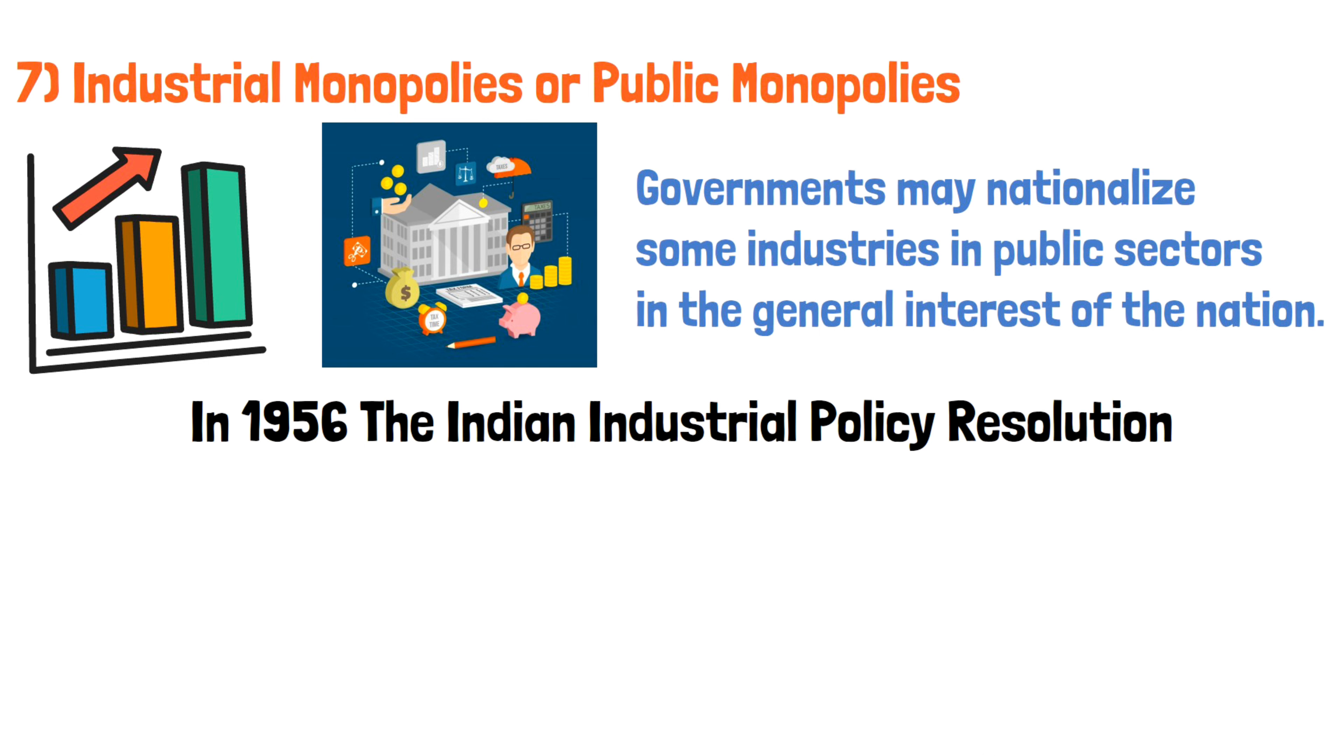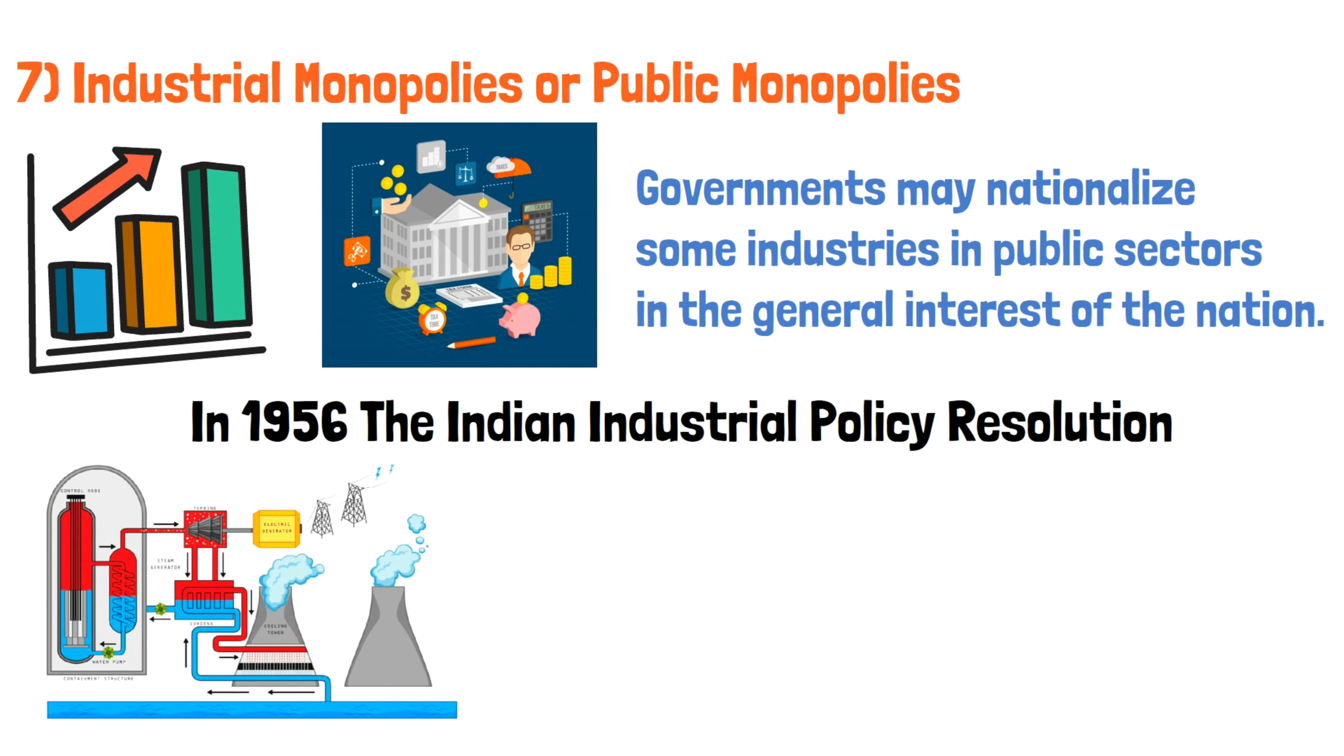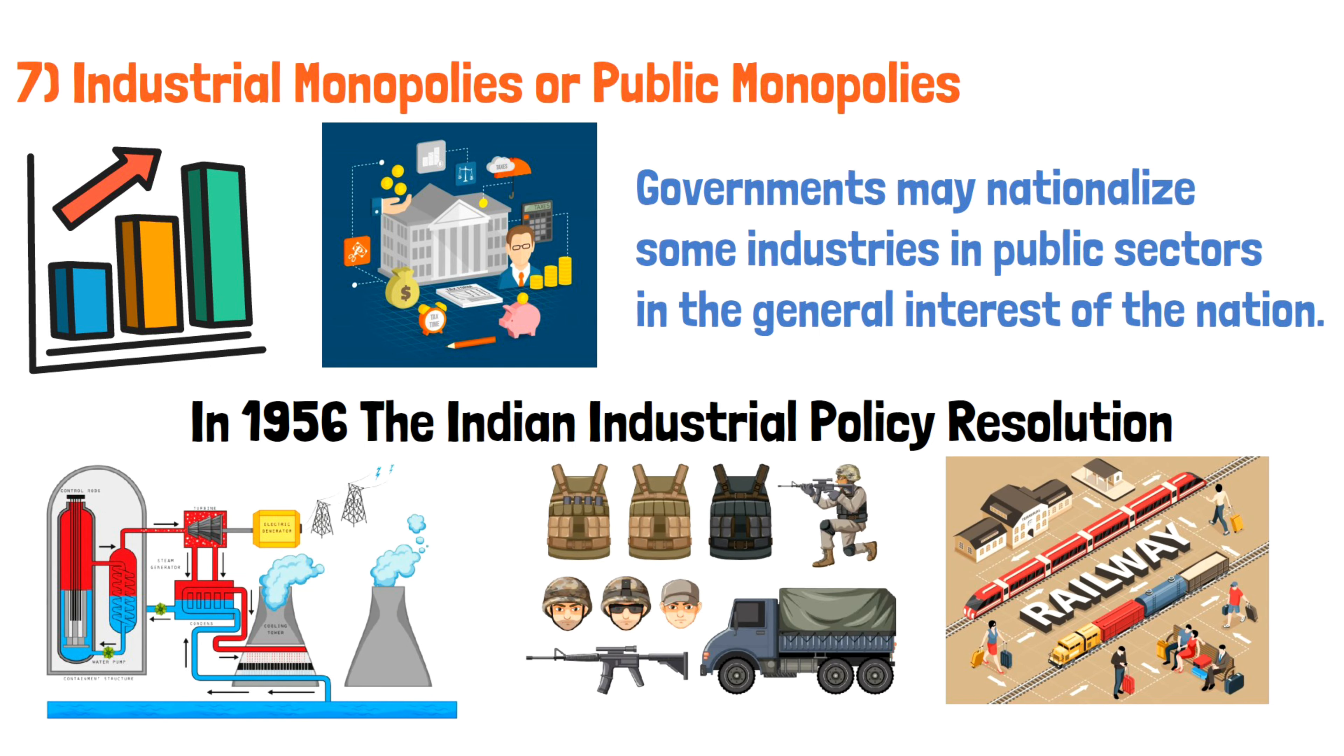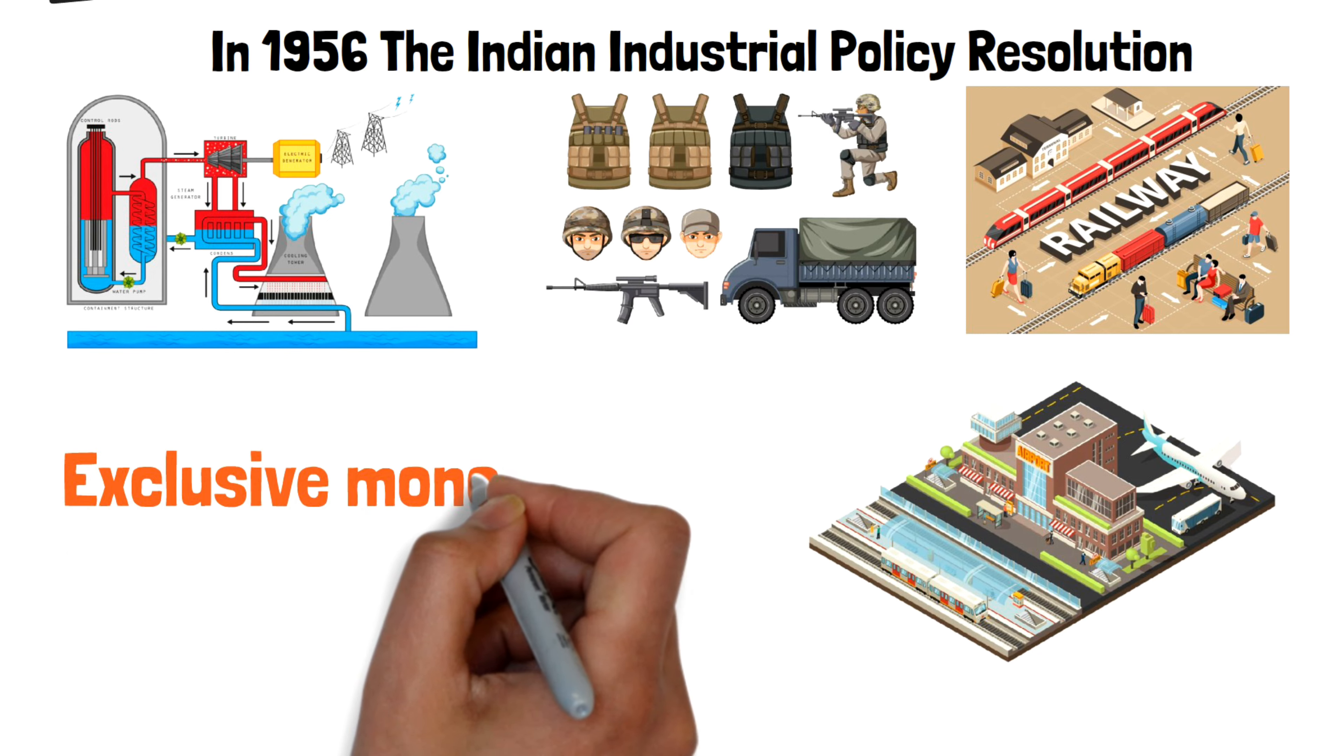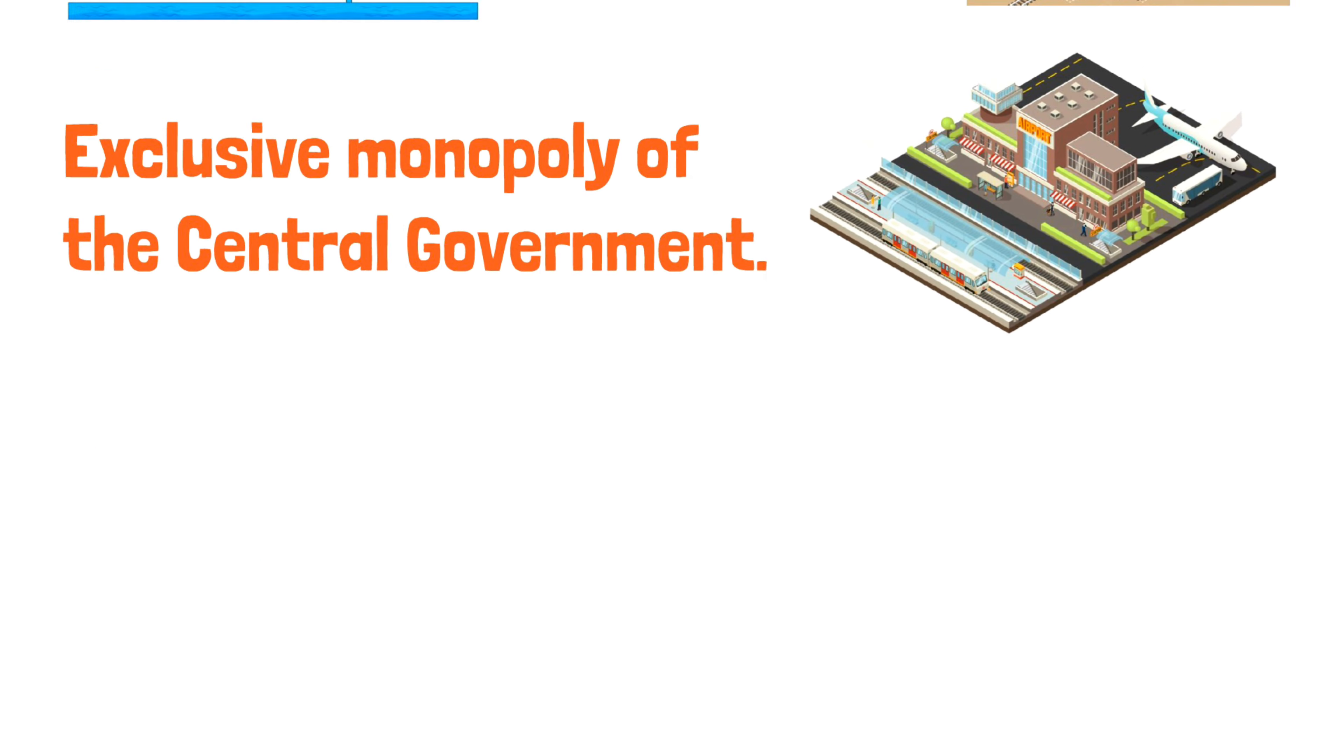emphatically lays down that certain sectors like atomic energy, arms and ammunition, railways and air transport will be the exclusive monopoly of the central government.